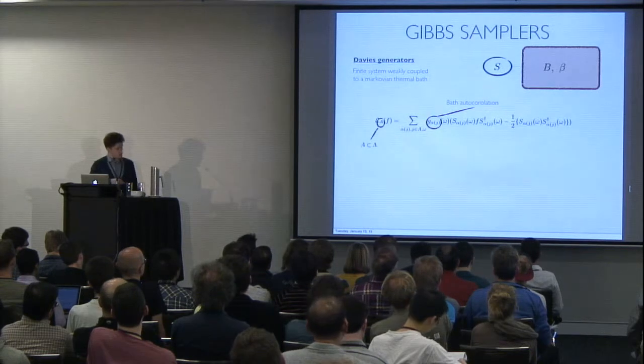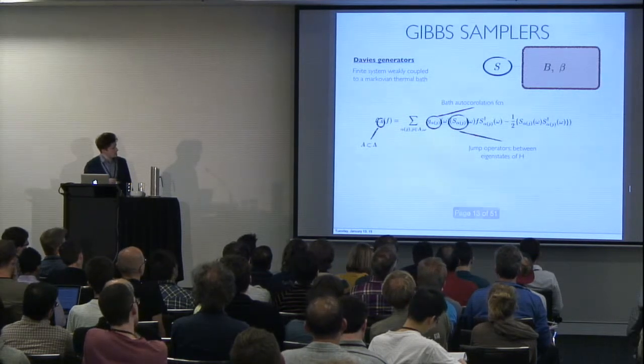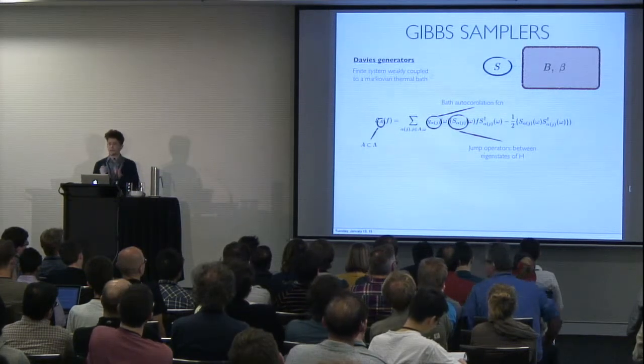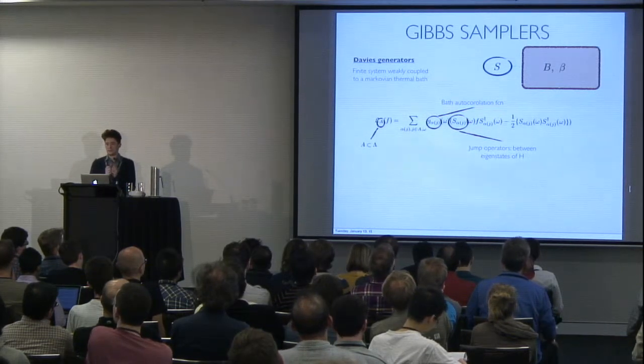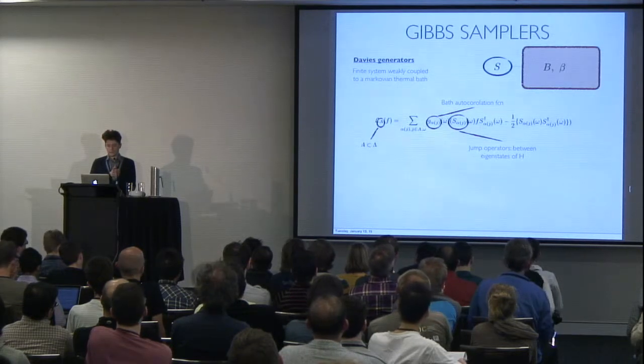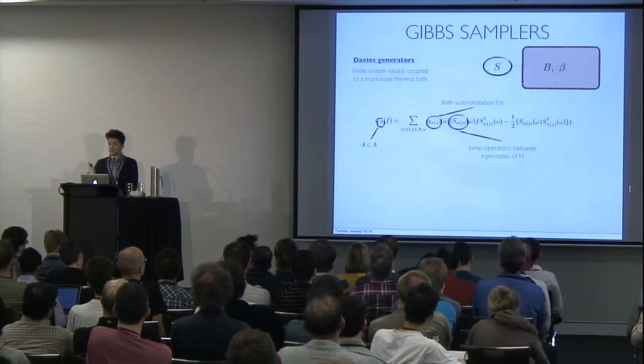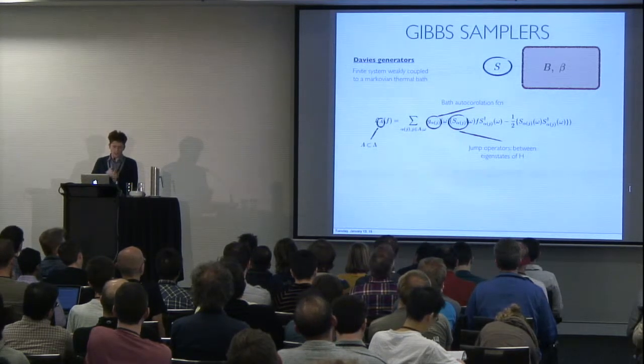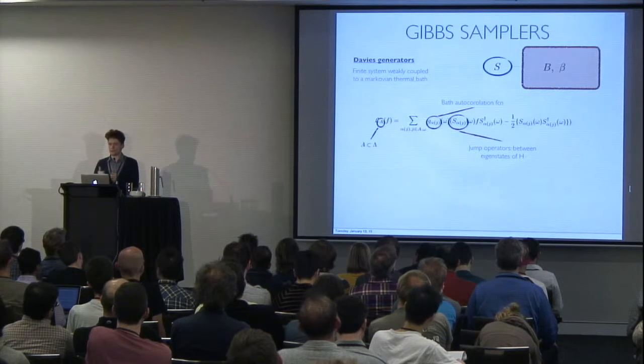This object has to do with the bath autocorrelation functions, and these are the jump operators. And physically what these jump operators do is that they jump,